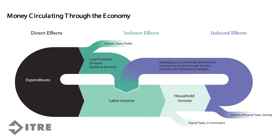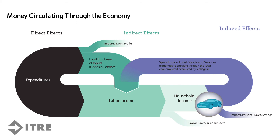Following these direct and indirect impacts, induced effects result from household spending. Though some of this also leaves the cycle in the form of payroll taxes and commuters who travel into the economy to work but live outside the area.